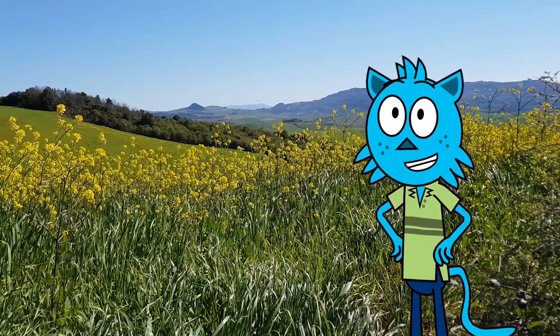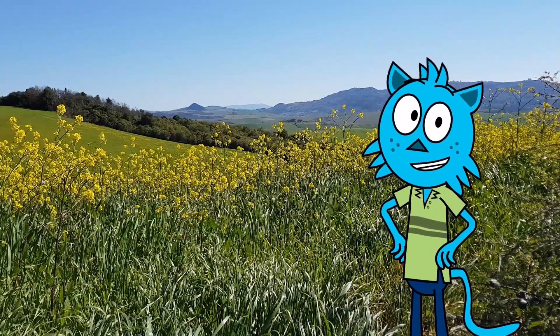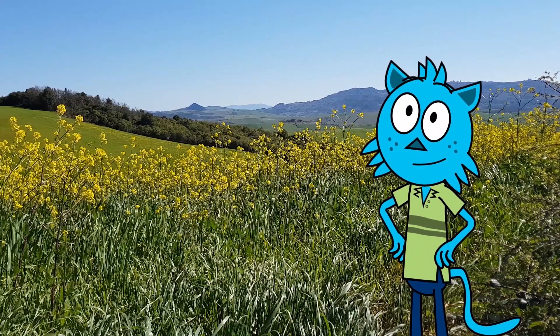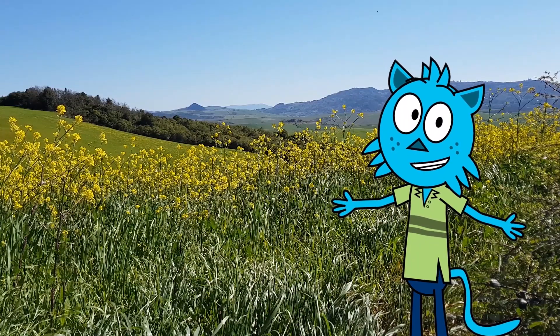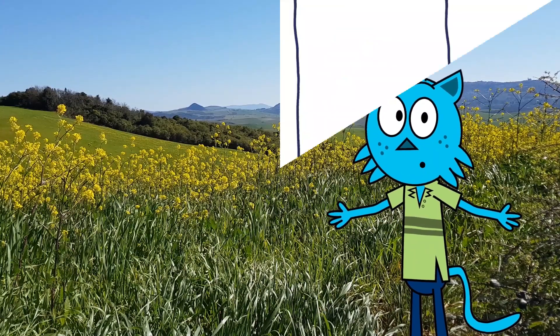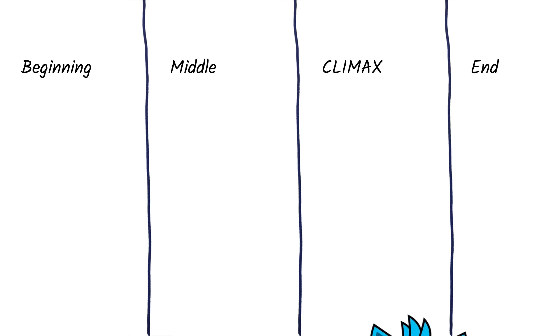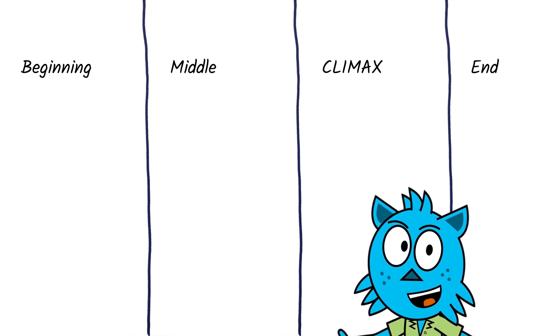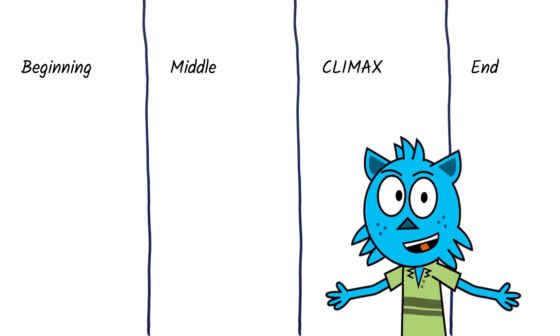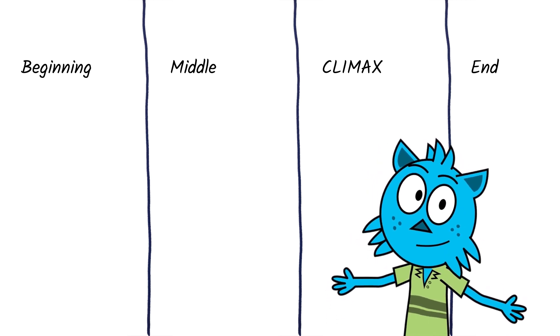Let's get ready by making a story planner. Take a piece of paper and divide it into four sections: Beginning, Middle, Climax, and End. For this lesson, we are going to focus on the climax.